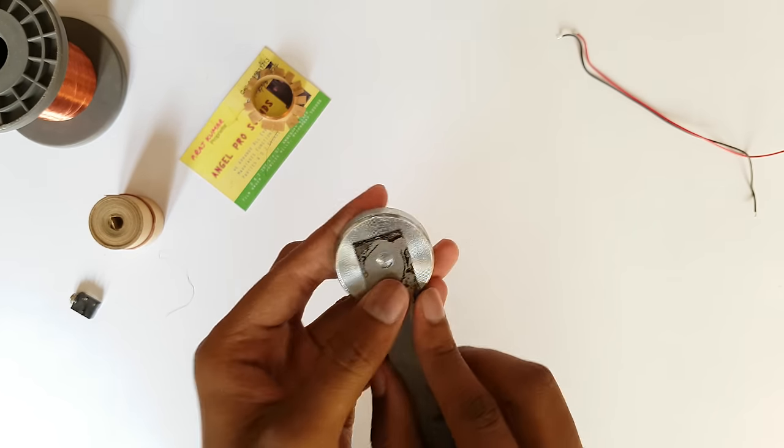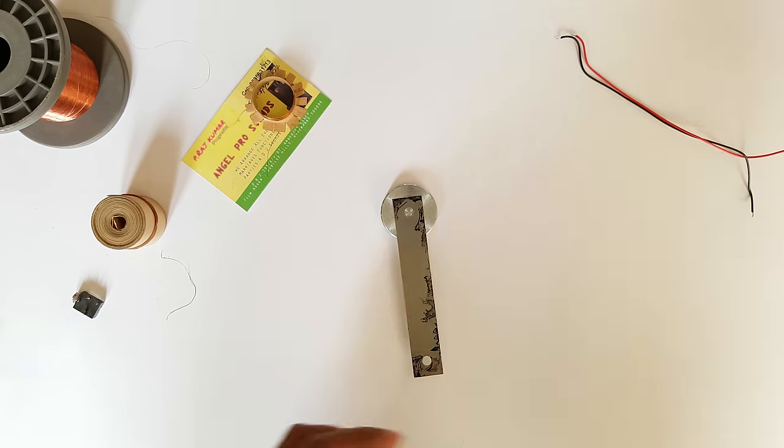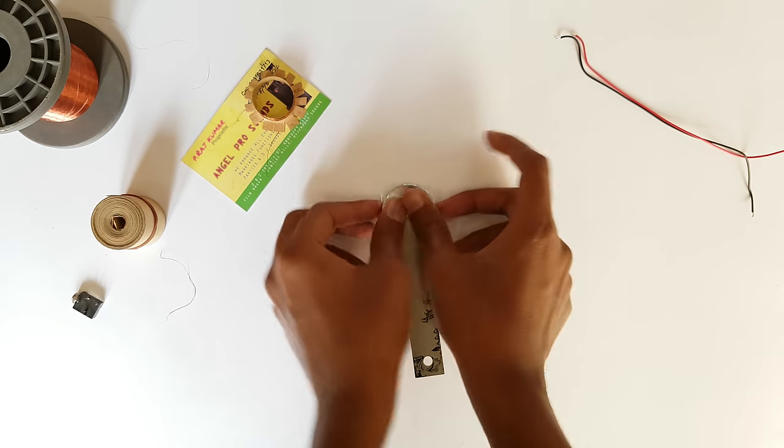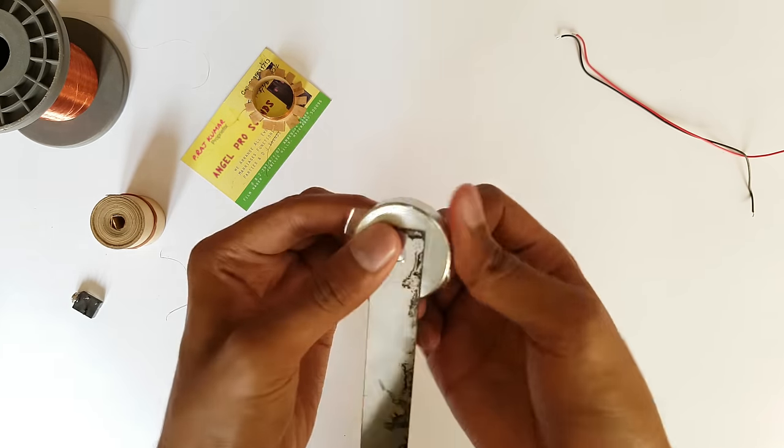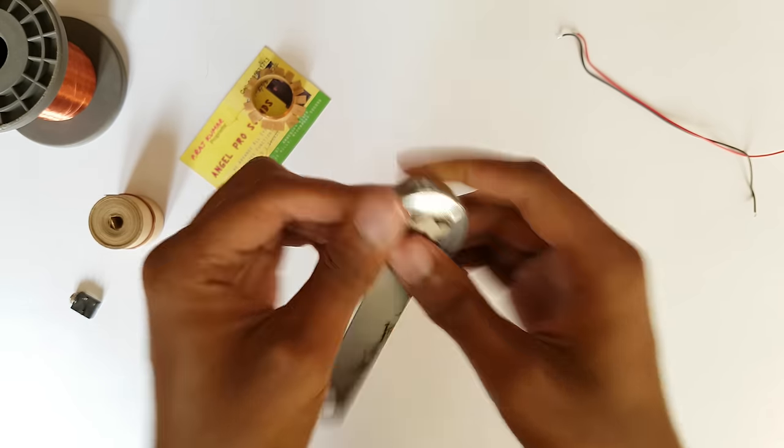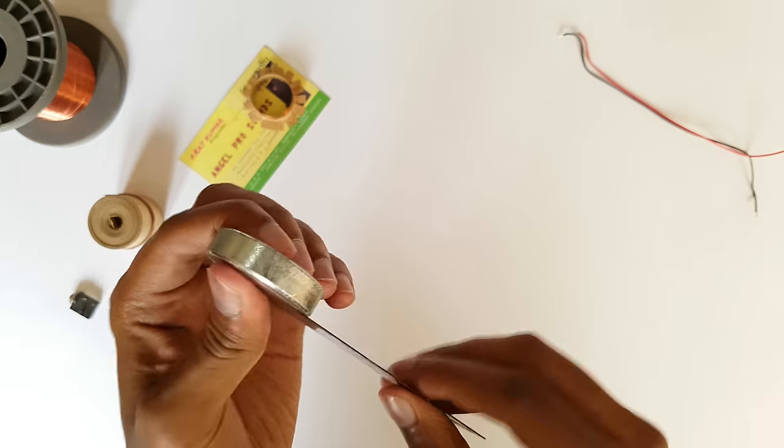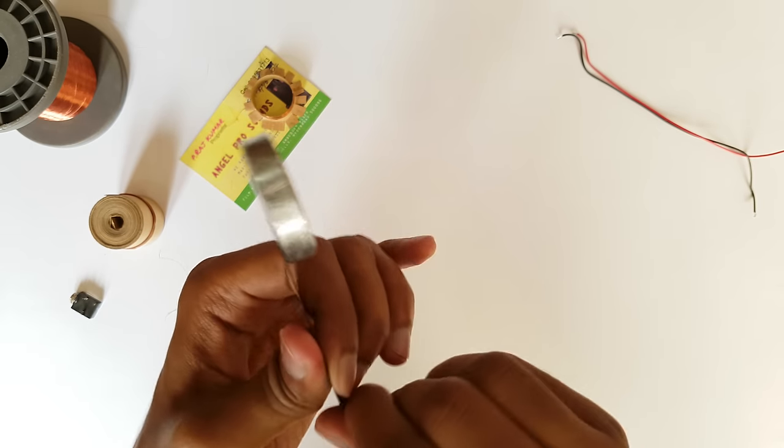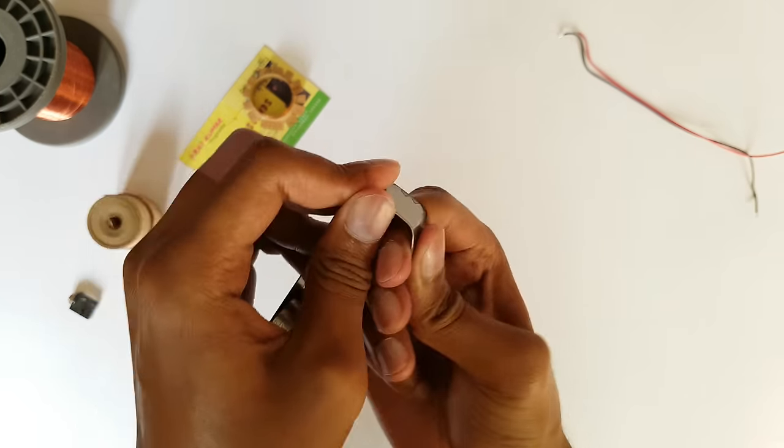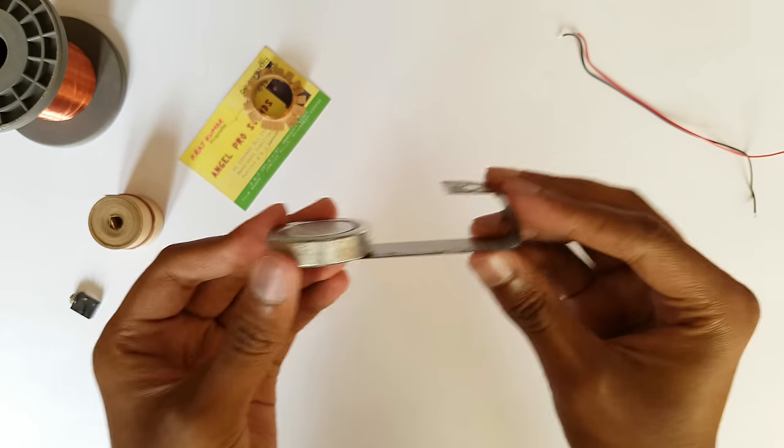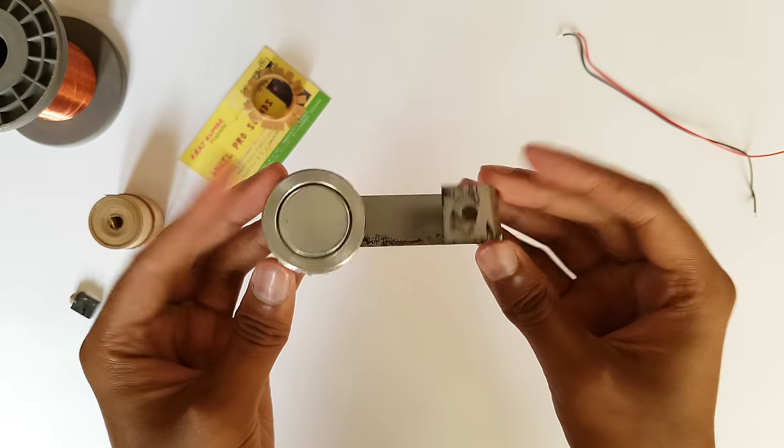Now take a metal strip. You need to attach the magnet to this metal strip. Take a piece of tape and attach the metal strip to the magnet just like this. Now you need to bend the metal strip. Bend the metal strip just like this. Watch carefully, this is how it should look like.